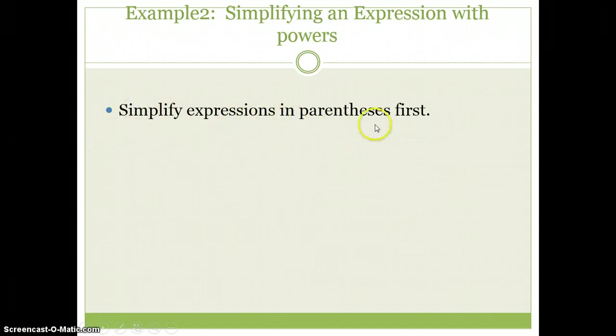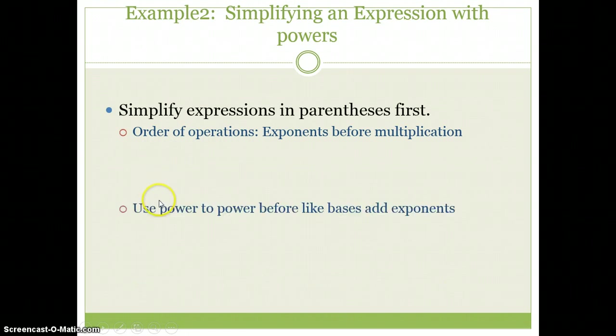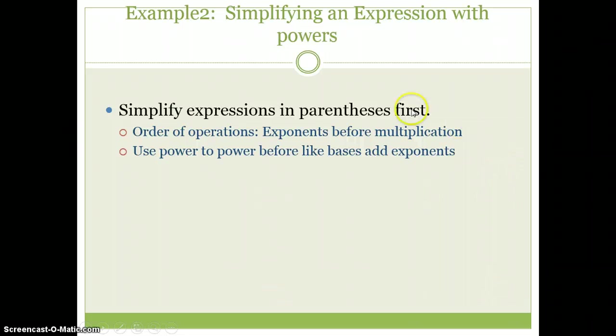Once you've simplified inside the parentheses first, order of operations - exponents before multiplication. What does that mean in these power to power and like base add exponent situations? It means do power to power before like base add exponents. I'd really like you to write this down in some notes. Maybe start a note card. This would be a great thing to put on a note card for the Chapter 8 test, along with those orange boxes.